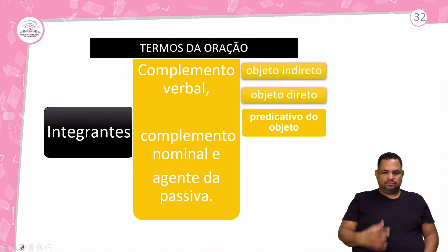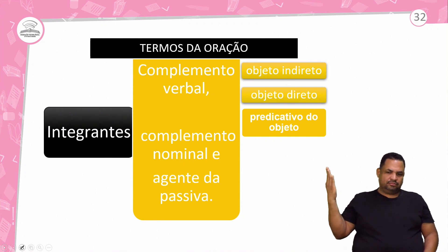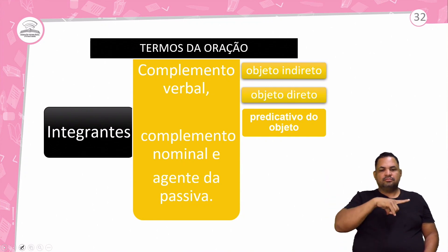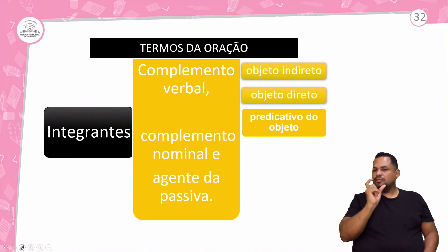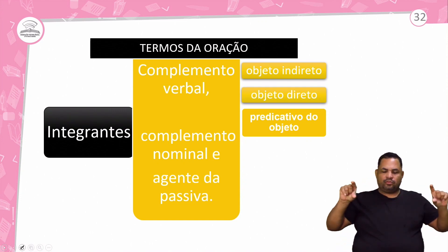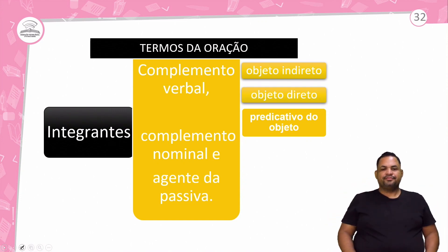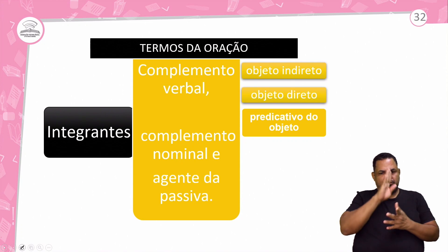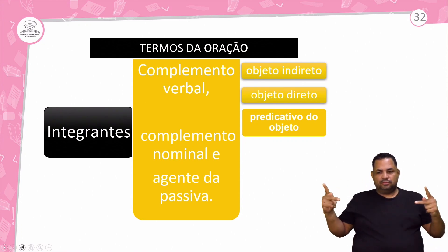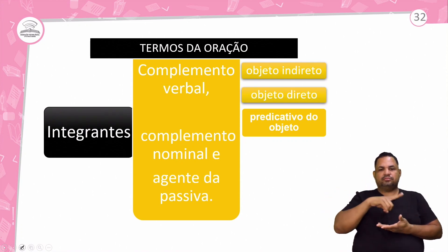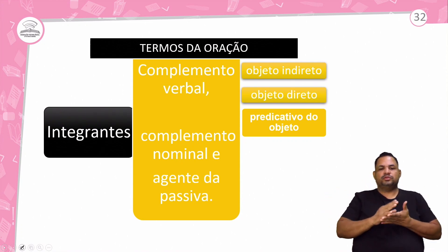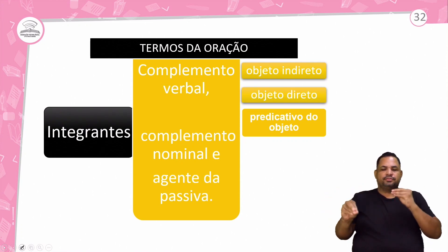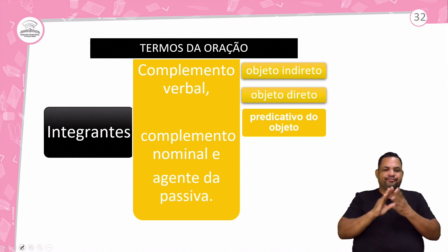Olha só, o que nós temos aqui? Quais são os termos da oração? Os termos essenciais são o sujeito e o predicado. Aqui nós estamos falando dos termos integrantes, que vamos lembrar, do complemento verbal.